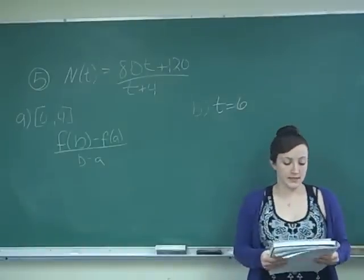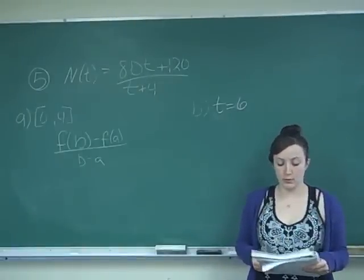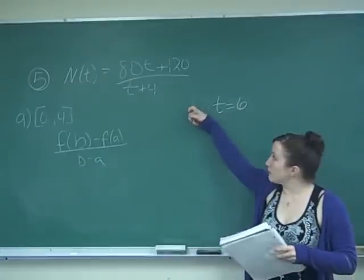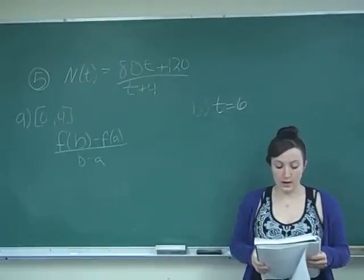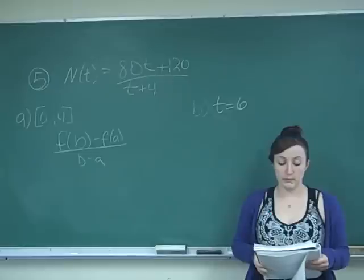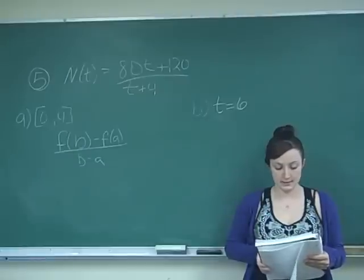Problem number five says, data from data entry classes show that an average student will learn to type according to the model N of T equals 80T plus 120 over T plus 4, where N of T is the number of words per minute a student can type accurately after T weeks in class.